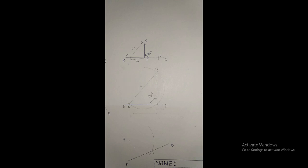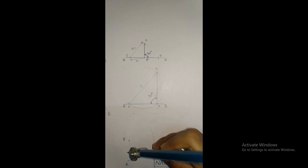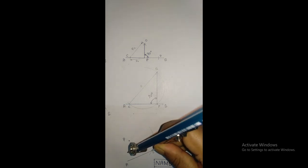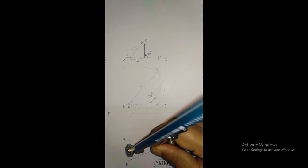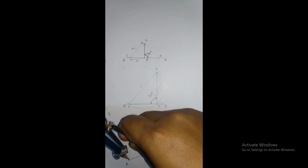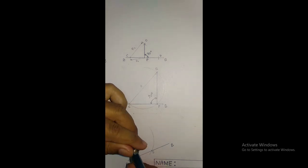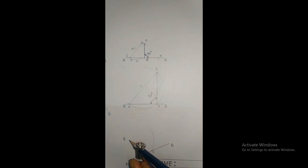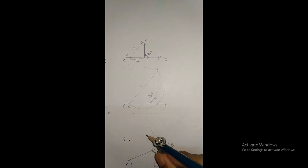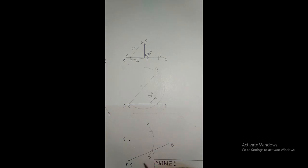Now with the same radius and center E, and radius equal to FP — where F is the marked point — draw an arc. This arc will intersect the previous arc CD at point Q.